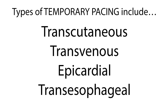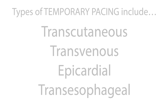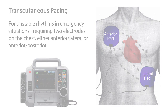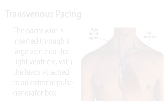Temporary pacemakers include transcutaneous, transvenous, epicardial, and transesophageal. Transcutaneous external pacing is primarily for unstable rhythms in emergency situations, requiring two electrodes on the chest either in the anterior lateral position or the anterior posterior position.